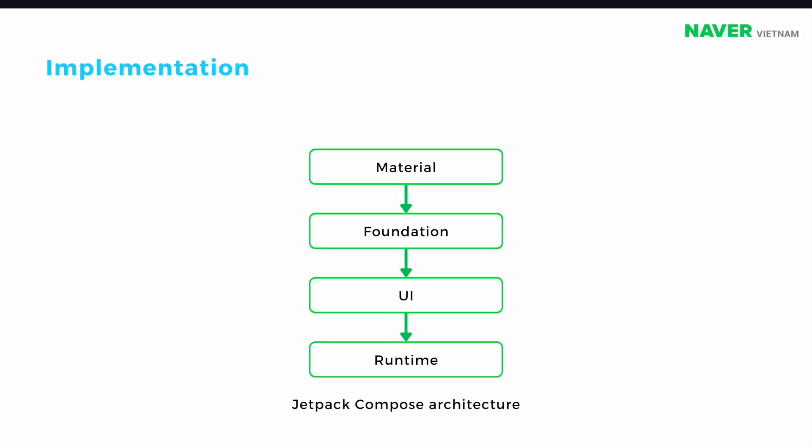Next, let's talk about how we can implement a design system with Jetpack Compose. Look at the Compose architecture — as you may know, there are 4 layers: Runtime, UI, Foundation, and Material. For Runtime, you might consider building directly upon this layer if you only need Compose's state management ability, not its UI.